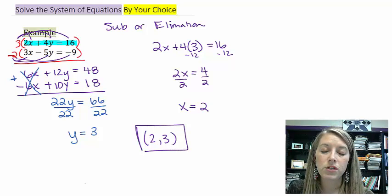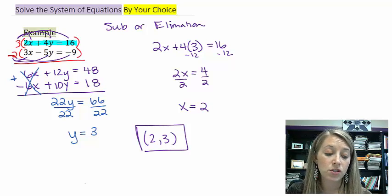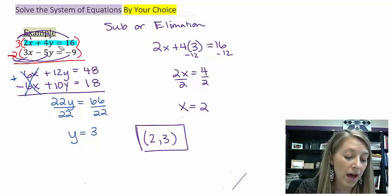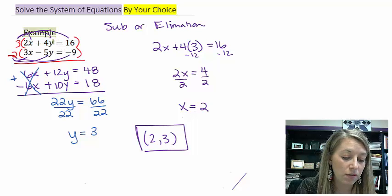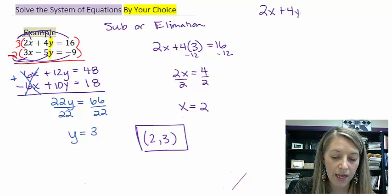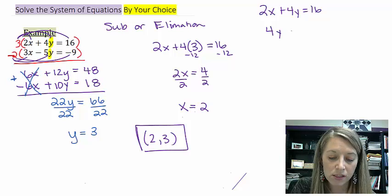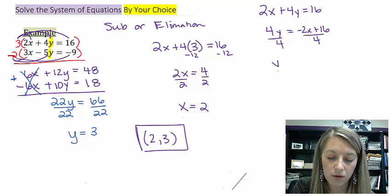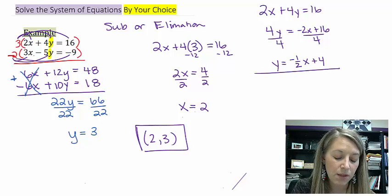If I wanted to solve this one by checking it with my calculator, all I would have to do is solve for the Y variable in each of these equations. So looking at the first one, 2X plus 4Y is equal to 16. Move my 2X to both sides. Divide by 4. Gives me Y is equal to negative 1 half X plus 4.